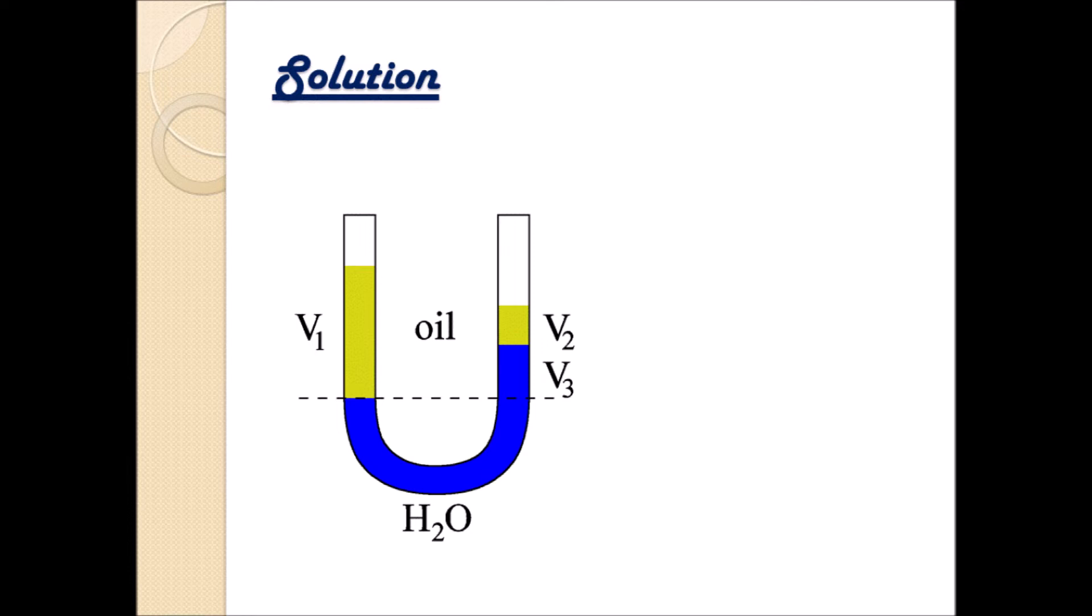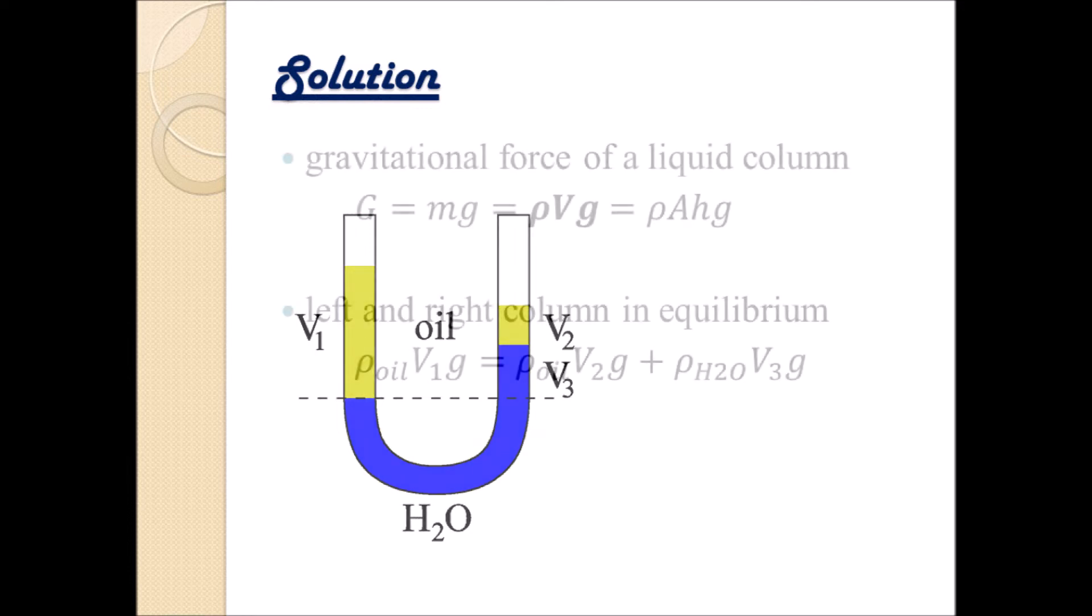So let's put it all down. It means that density oil multiplied with volume V1 multiplied with gravitational constant g equals rho oil multiplied with V2 and g plus the density of water multiplied with the respective volume of the water V3 multiplied with g.